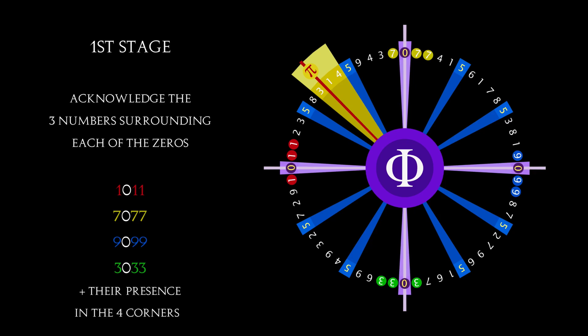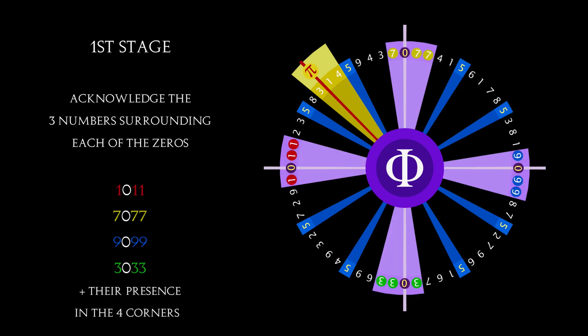The three numbers that surround each of the zeros are repeated: one, zero, one, one, seven, zero, seven, seven, nine, zero, nine, nine, three, zero, three, three. These numbers form the first arm, or cog, in the mechanism. And the cross formed by the pi numbers forms another arm.